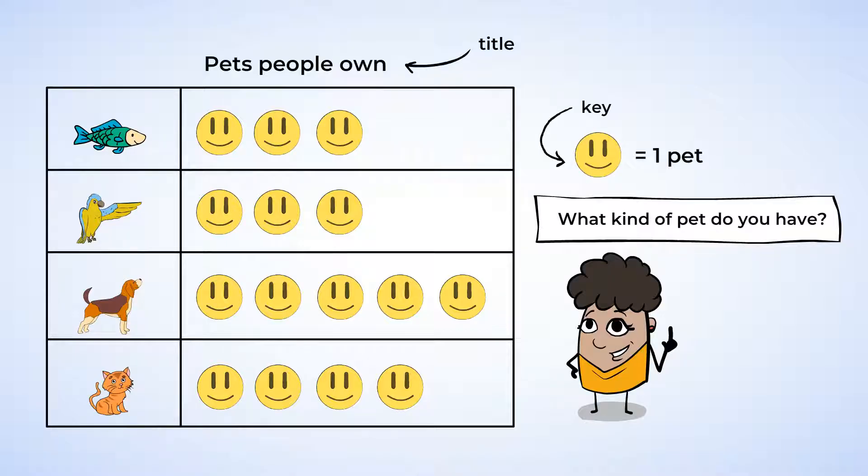It has a key, which tells us what the symbol in the picture graph means. In this case, the key tells us that one happy face symbol represents one pet that a person owns. And it has a label for each category: fish, bird, dog, and cat. And it has the symbols neatly organized in each row.